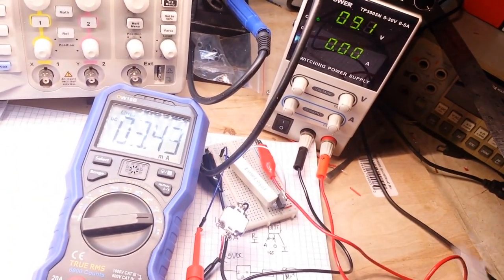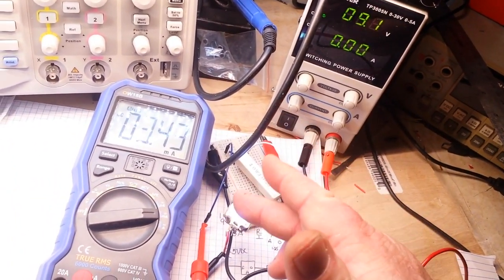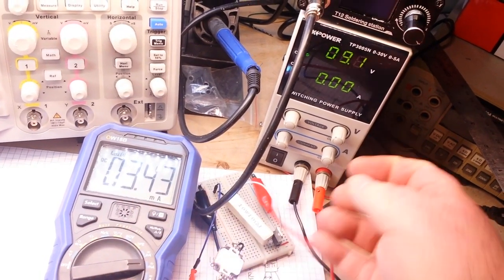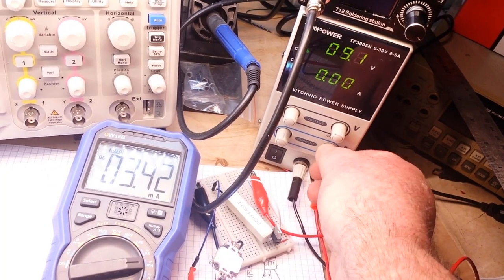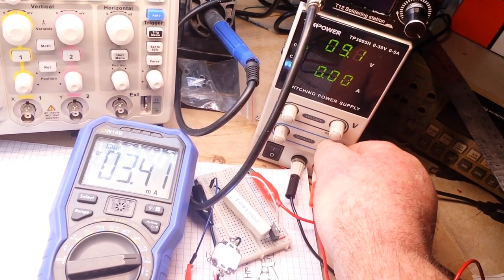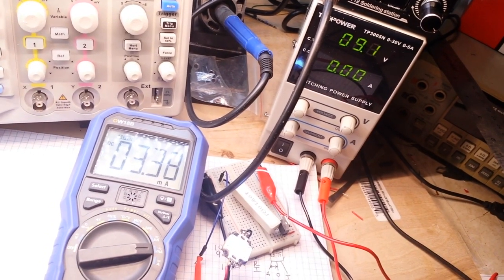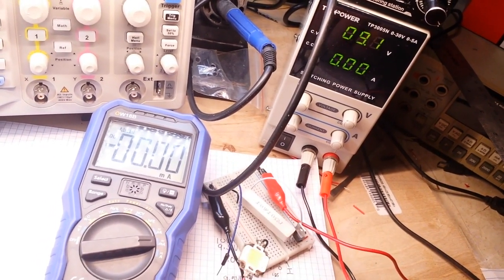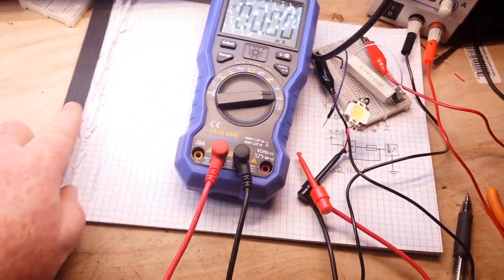Okay, so I can take that off now. You can see that's still on. You can see our power is there. You can see our current, and if I twiddle the current knob, absolutely nothing happens. We have in fact created our constant current LED driver.